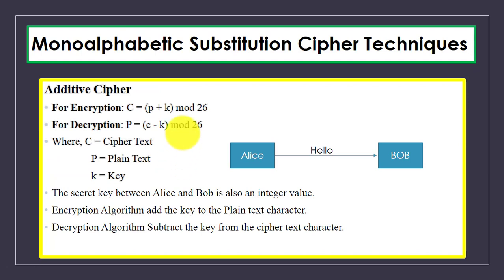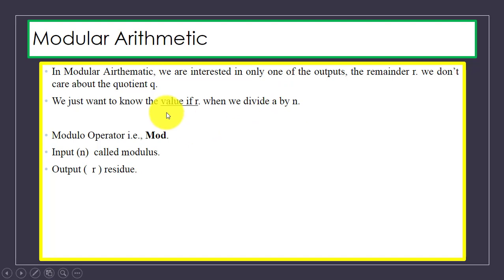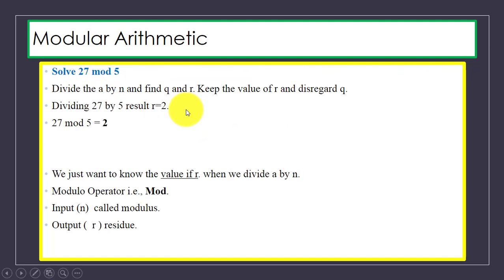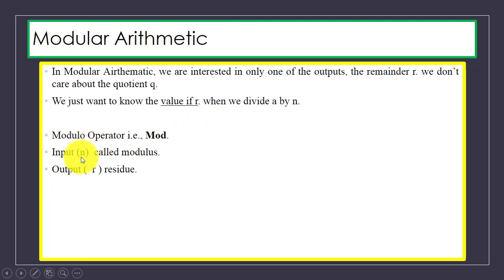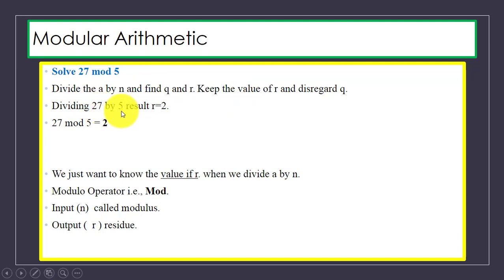We need to understand modular arithmetic. In modular arithmetic we are interested in the remainder r — we divide a by n and find the value of r, where mod is the modulo operator, n is the input, and r is the remainder. For example, 27 mod 5: divide 27 by 5, five fives are 25, so the remainder is 2. Therefore 27 mod 5 = 2.